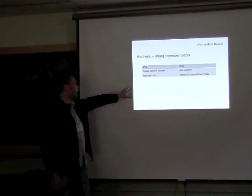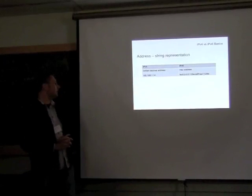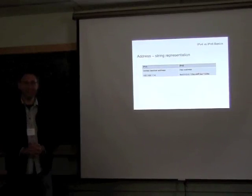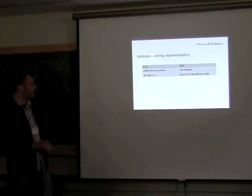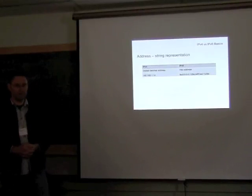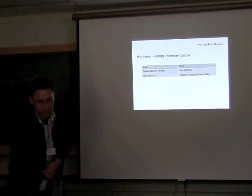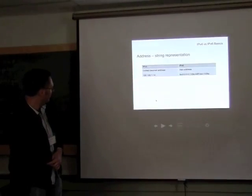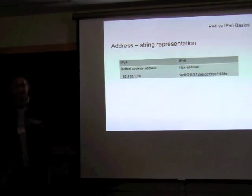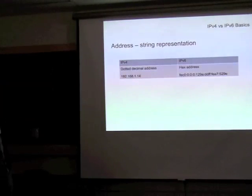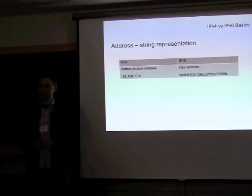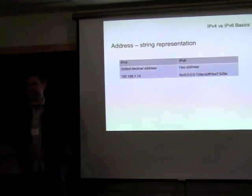We all know and love the dotted decimal address format of IPv4. IPv6 addresses are written out in hex format — eight two-byte pairs making up the address, written out in hexadecimal. You are actually allowed to compress one run of zeros in an IPv6 address by just dropping it out and leaving the colons, which at least makes local network addresses somewhat memorable.